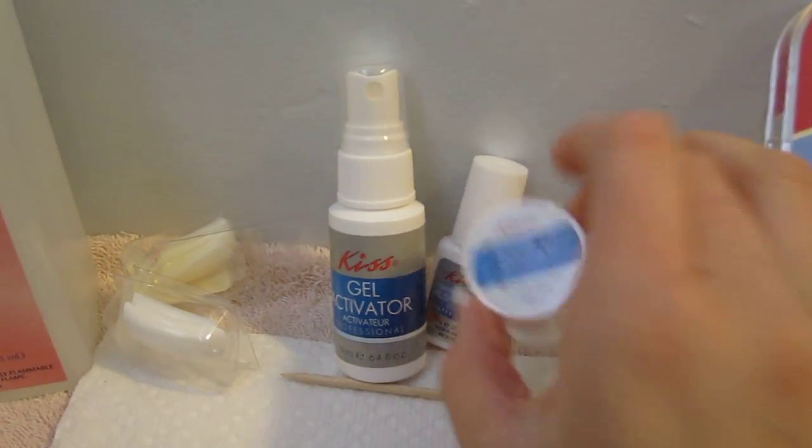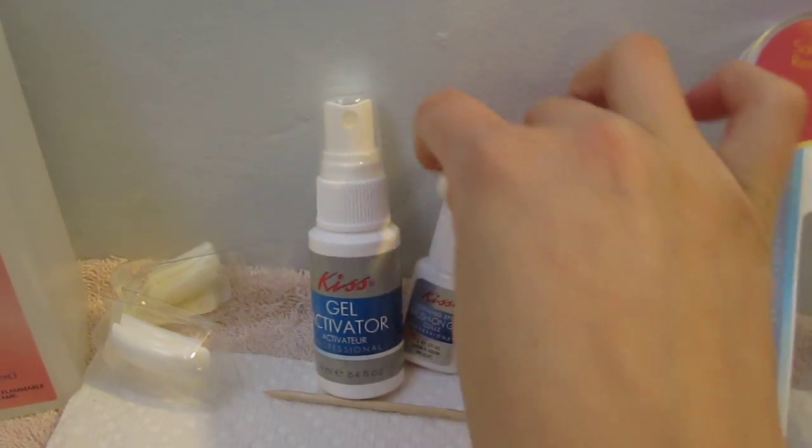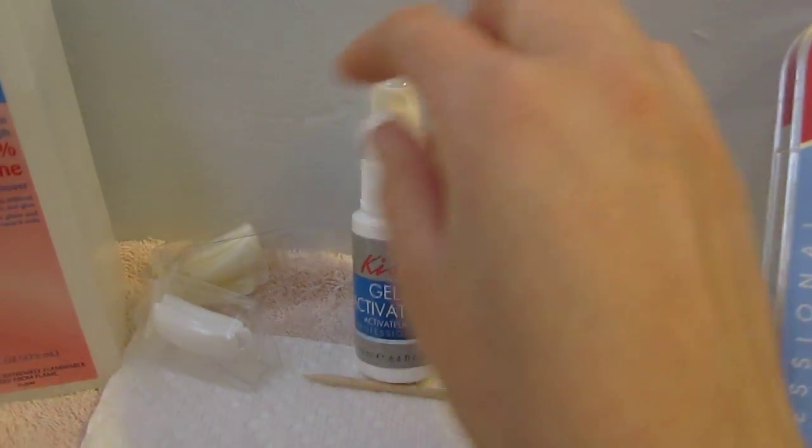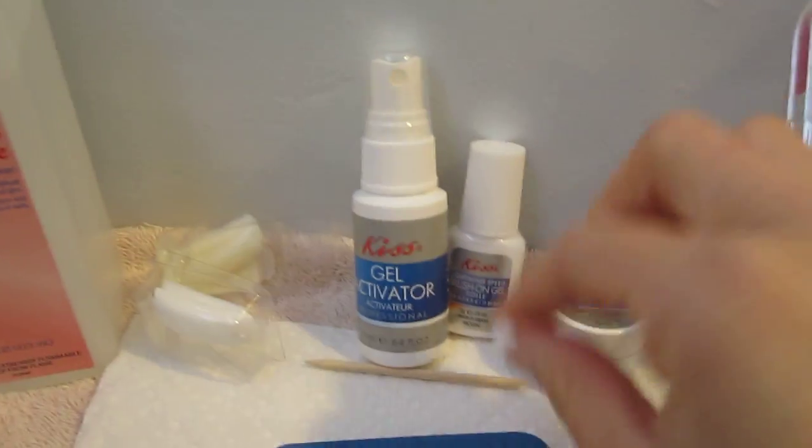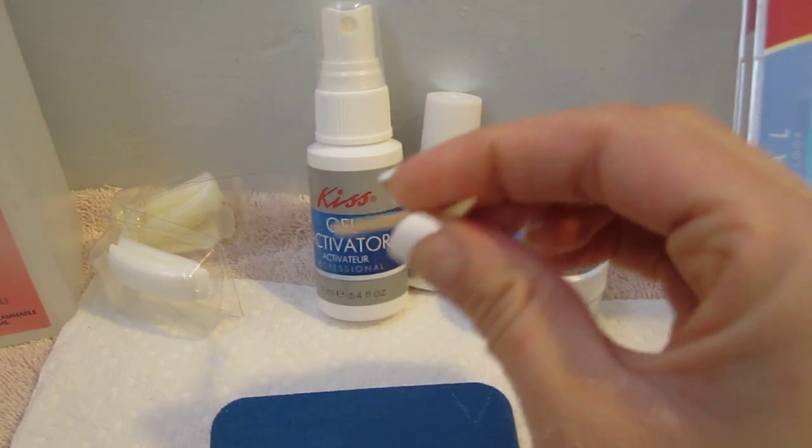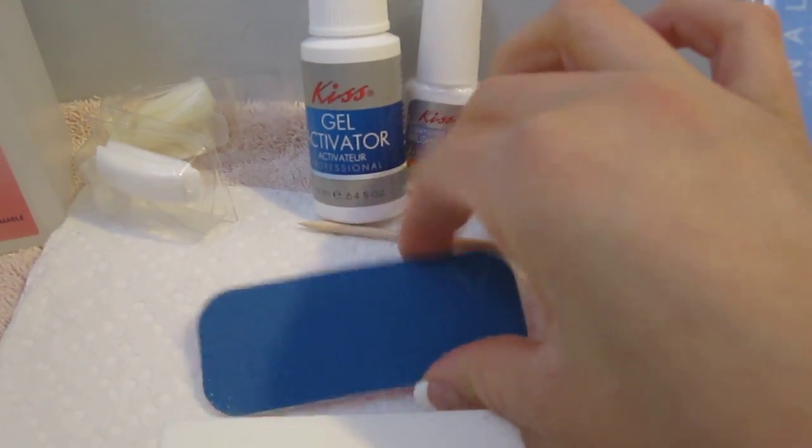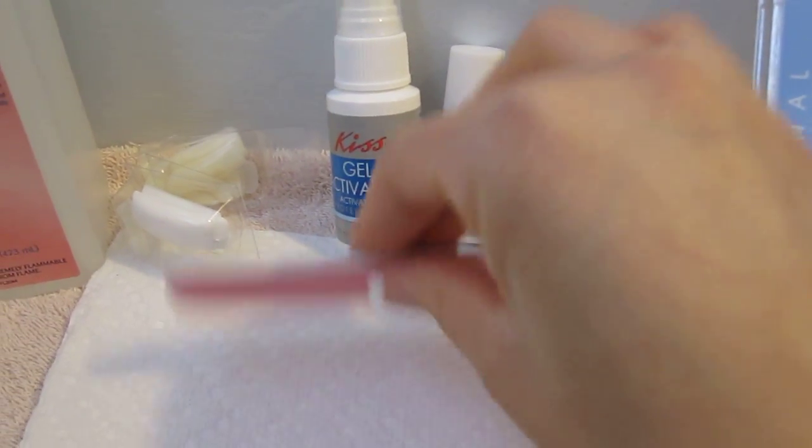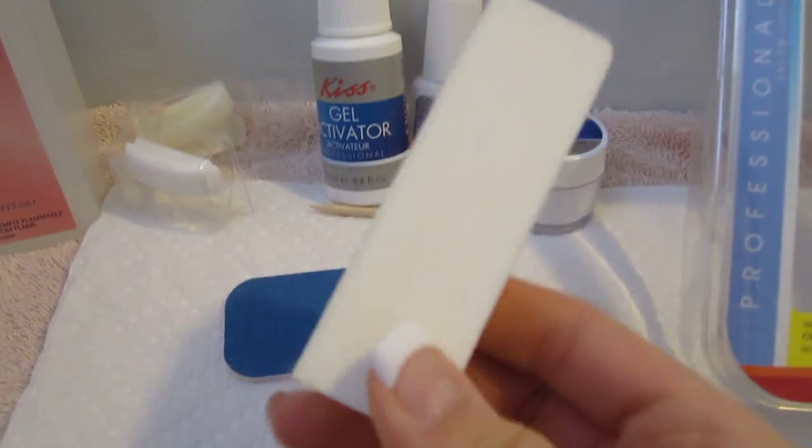But it comes with the acrylic powder, the gel, the gel activator, the nails of course, the little cuticle stick, the nail file, and then the little polishing file.